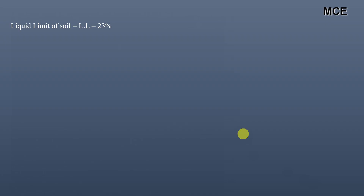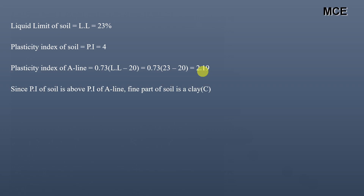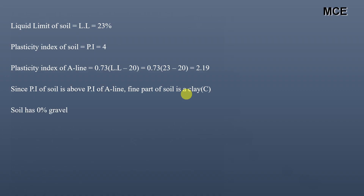The plasticity index of the A-line is calculated as 0.73 × (LL − 20) = 0.73 × (23 − 20) = 2.19. The plasticity index of the soil is 4, which is greater than 2.19. Since the plasticity index of the soil is above the A-line on the plasticity chart, the fine part of this soil is clay. With the coarse fraction being sand and zero percent gravel, the soil is classified as Clayey Sand, group name: Clayey Sand, group symbol: SC in the Unified Soil Classification System.